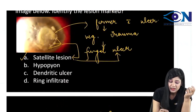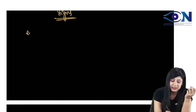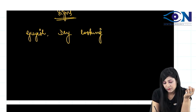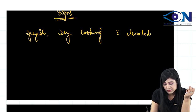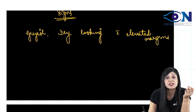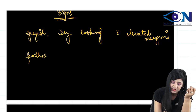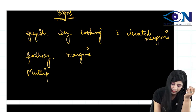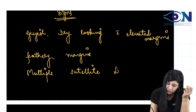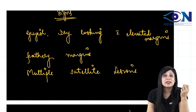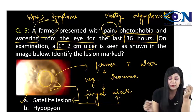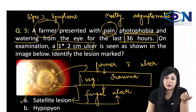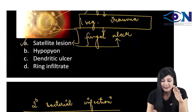Always remember that signs are much more important than symptoms, so look at the signs. We have a large ulcer, and the color of the ulcer is grayish — it is dry looking with elevated margins. We also have feathery margins that you can see here. Then you can have multiple satellite lesions. There are so many things making you sure. Then you have a farmer by occupation, again coming from a rural background where the history of vegetative trauma is a very common scenario. By all these things, you are sure that the answer is satellite lesions.